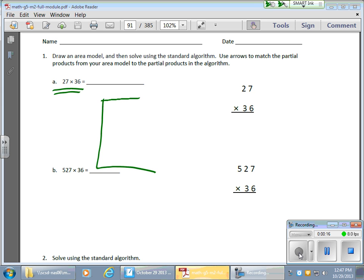Now, if I was to start setting up an area model, I would notice that if I take my 27 here and break that up into my 20 and my 7, if I put a 36 up here, multiplying 7 times 36 and then 20 times 36, that poses a bit of a problem.